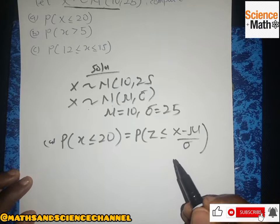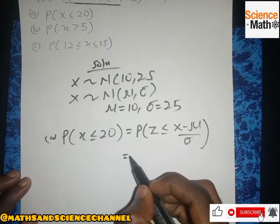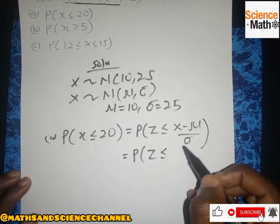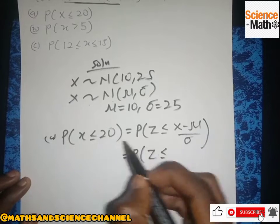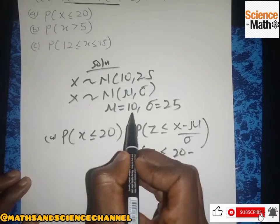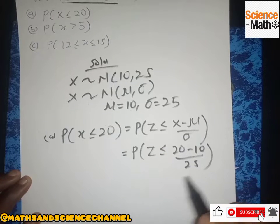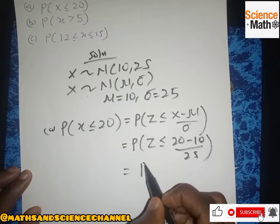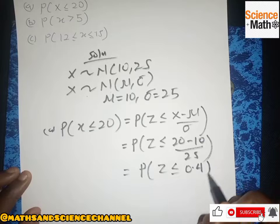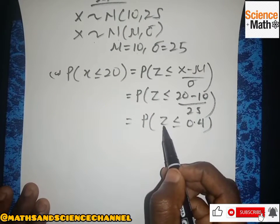This is a normal distribution, so we are not using the sample distribution formula. We have P(z ≤ (S - μ) / σ), where S is 20, mu is 10, and the standard deviation is 25. Computing that gives us z less than or equal to 0.4.